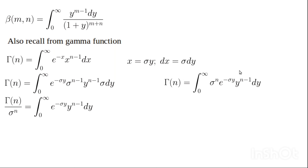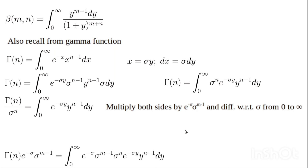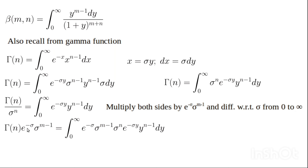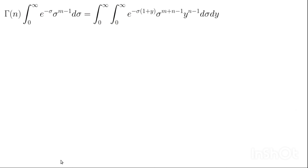We can go back to using this expression. We multiply both sides by a suitable expression and integrate with respect to σ from zero to infinity. Carrying this out on both sides and integrating from zero to infinity, we notice that one part is a constant we can factor out, leading to a combined expression relating the gamma function to the beta function.